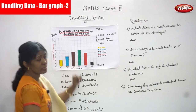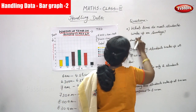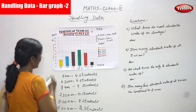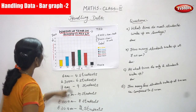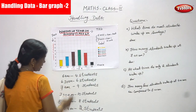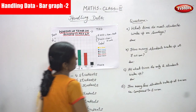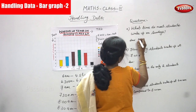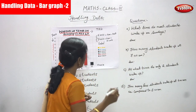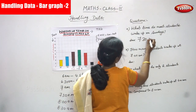Now we are going to analyze the question. What time do most students wake up on Sunday? Most of the students wake up on Sunday — at what time? That means 7:30 a.m., because 10 students — the highest number of students is 10. So 10 students — what time? 7:30 a.m.